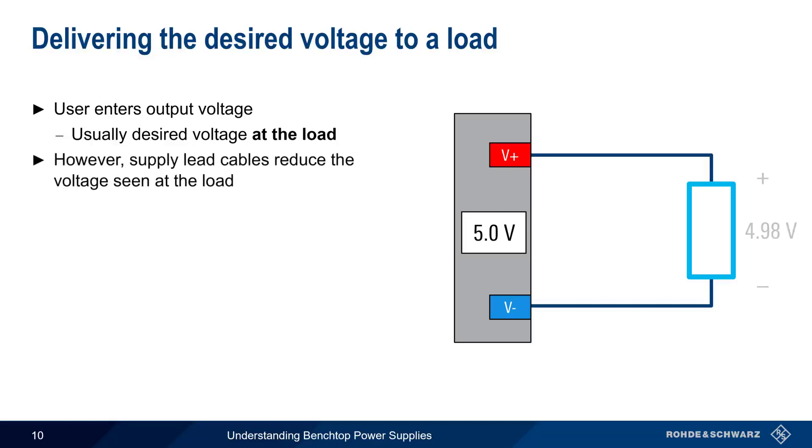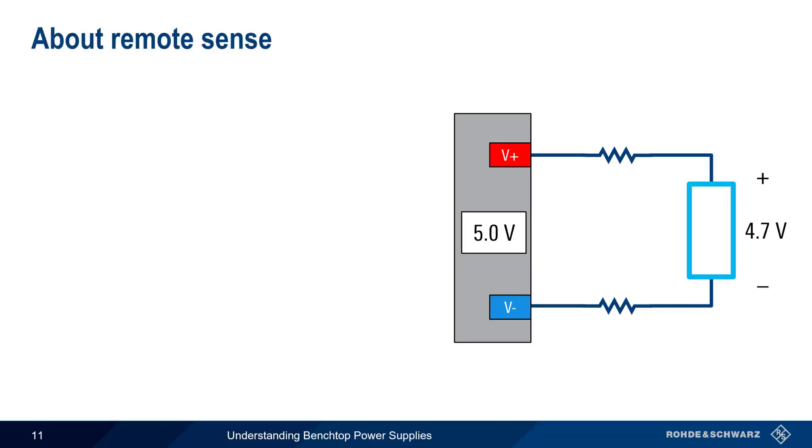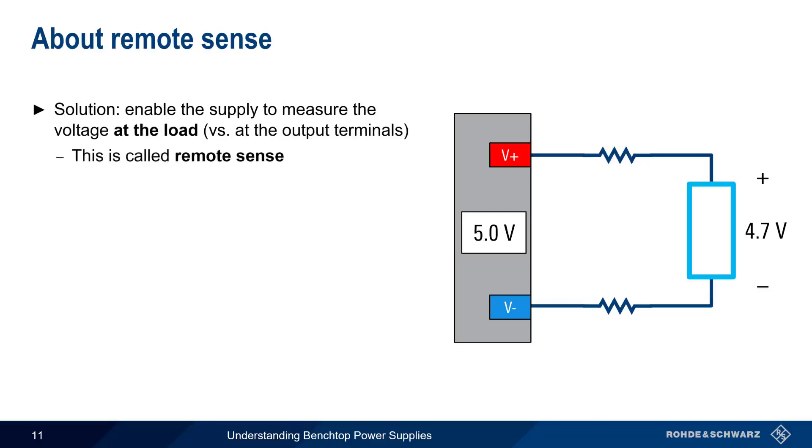However, the power supply lead cables will reduce the voltage seen by the load, because these leads have a non-zero resistance. This resistance increases as the leads become longer and or thinner. In many cases, lead resistance and the resulting voltage drop can be safely ignored, but this decrease in voltage can become significant when working with higher currents or smaller load resistances. The most common solution to this problem is to enable the supply to measure the output voltage at the load instead of at the output terminals, and this methodology is called remote sense.